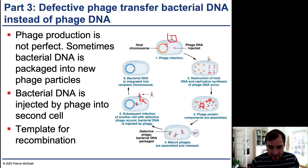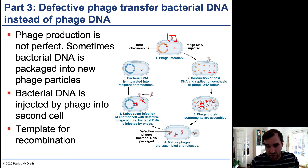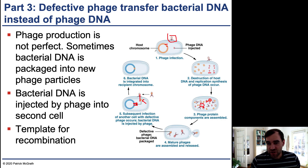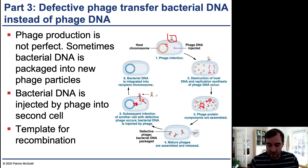This linear piece of bacterial DNA can recombine with the recipient's host chromosome, replacing part of the recipient chromosome with the transferred DNA — it becomes a template for recombination. This process is referred to as transduction, where the viral particle is responsible for transferring bacterial DNA from one cell to another.